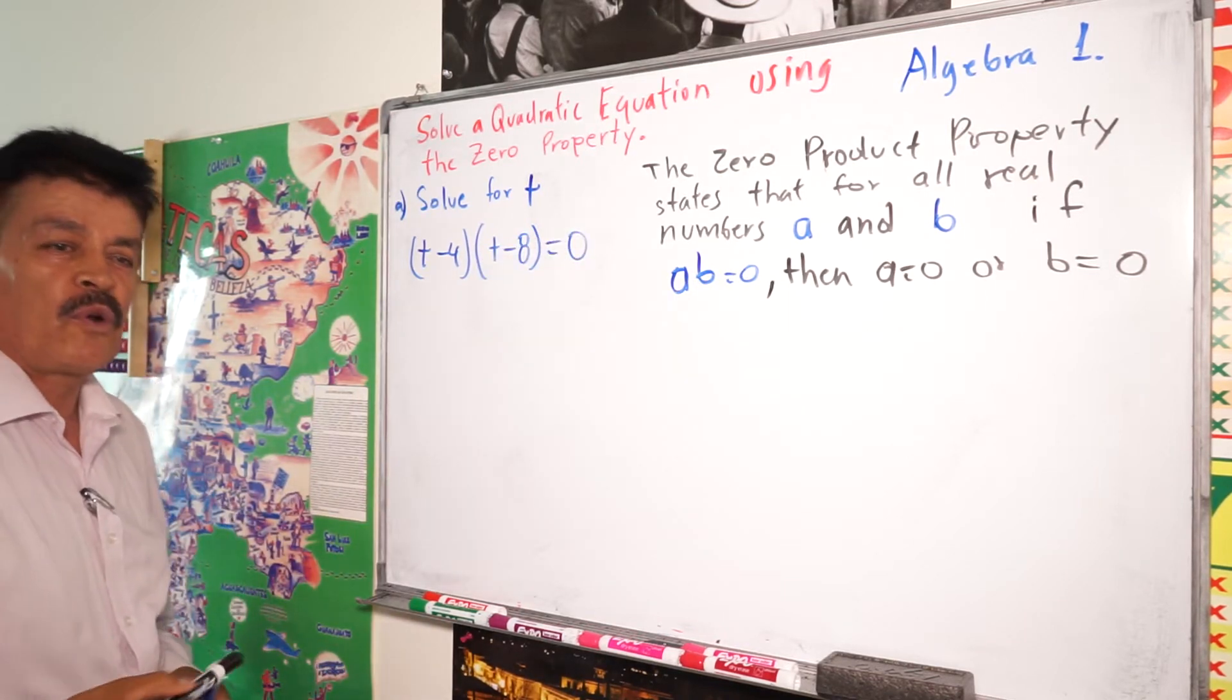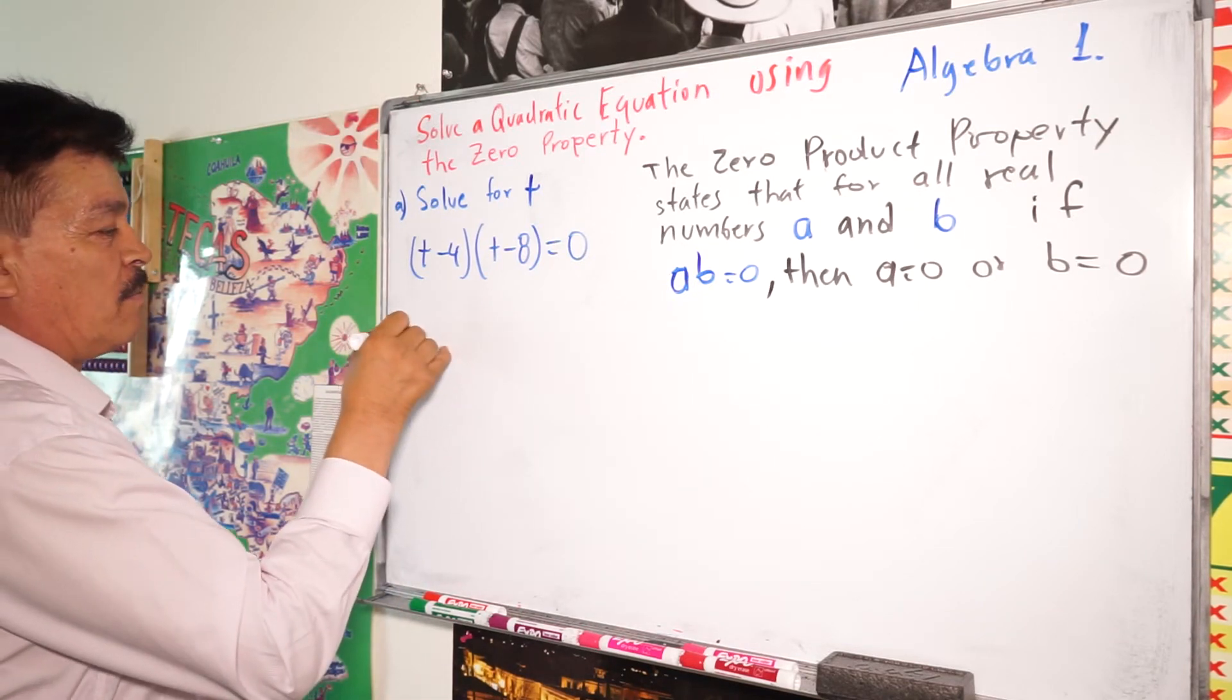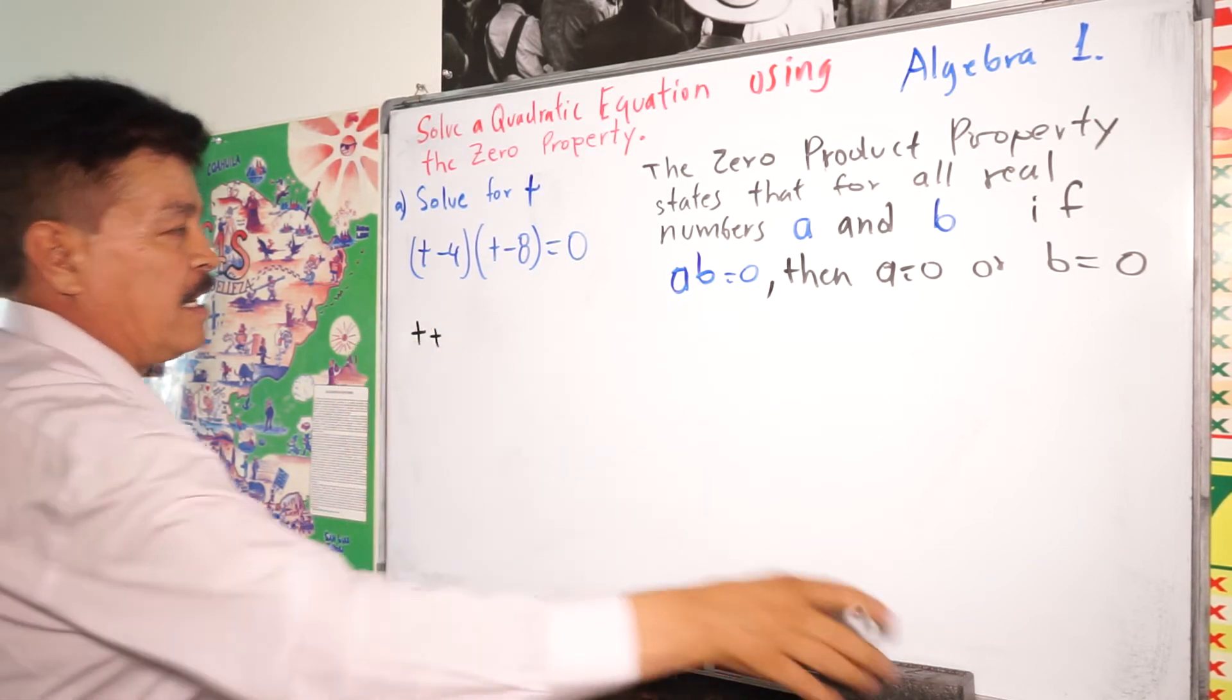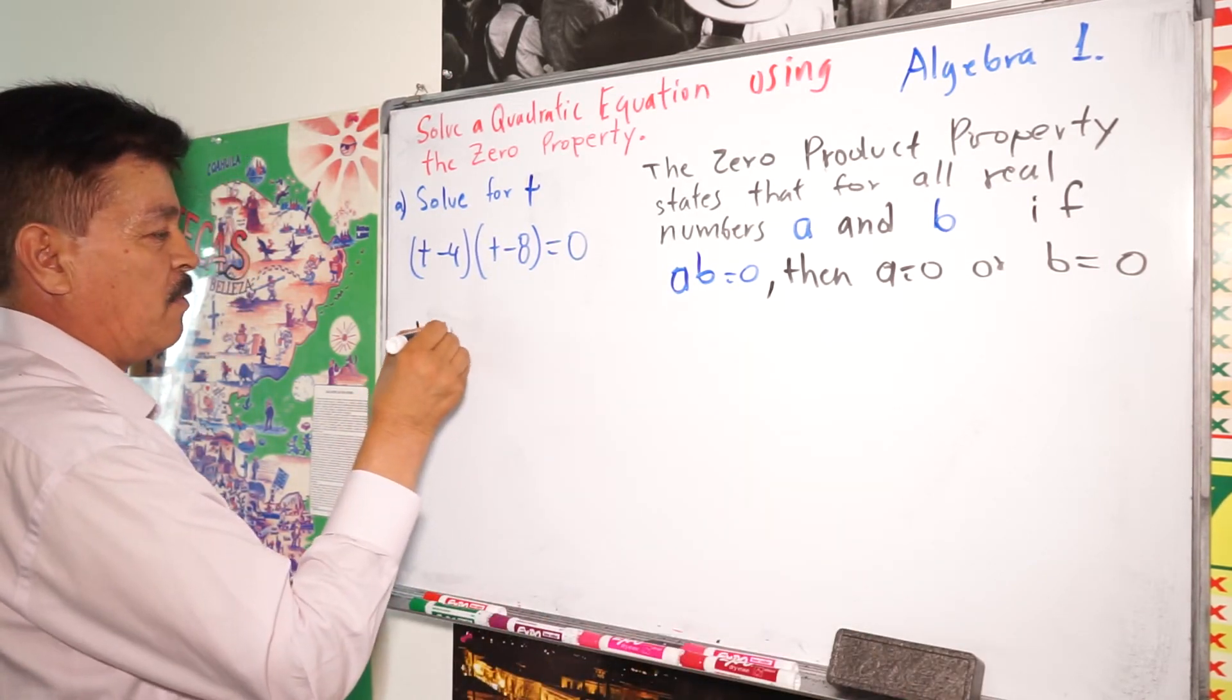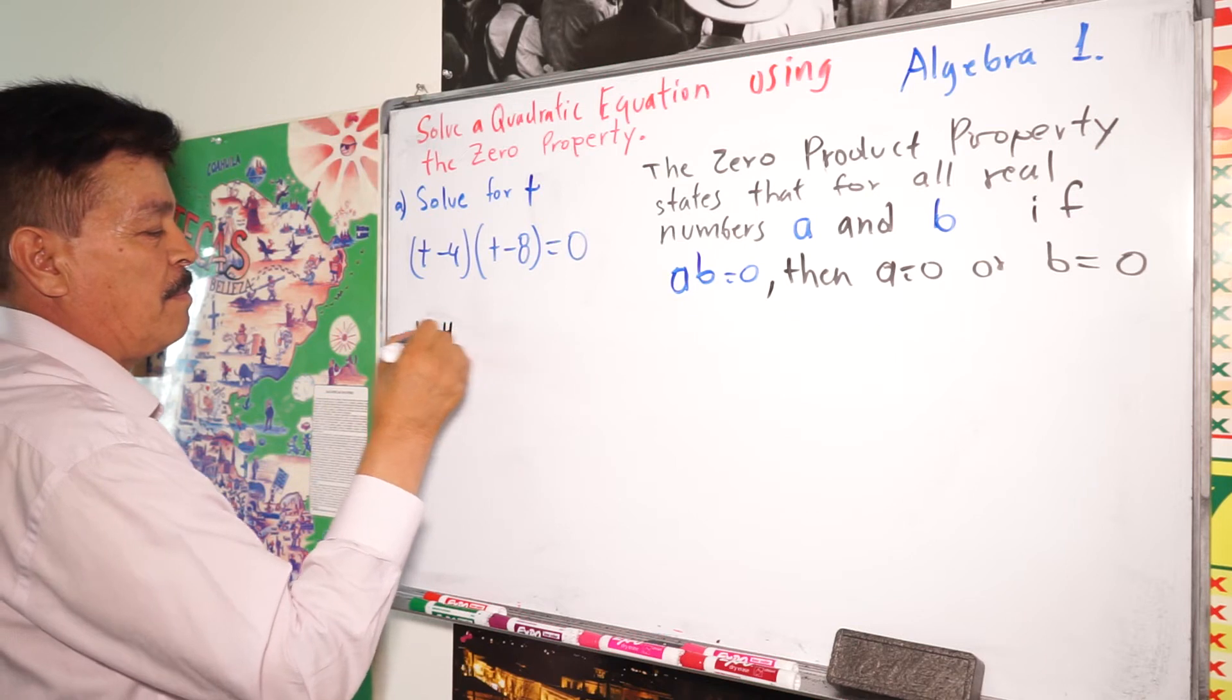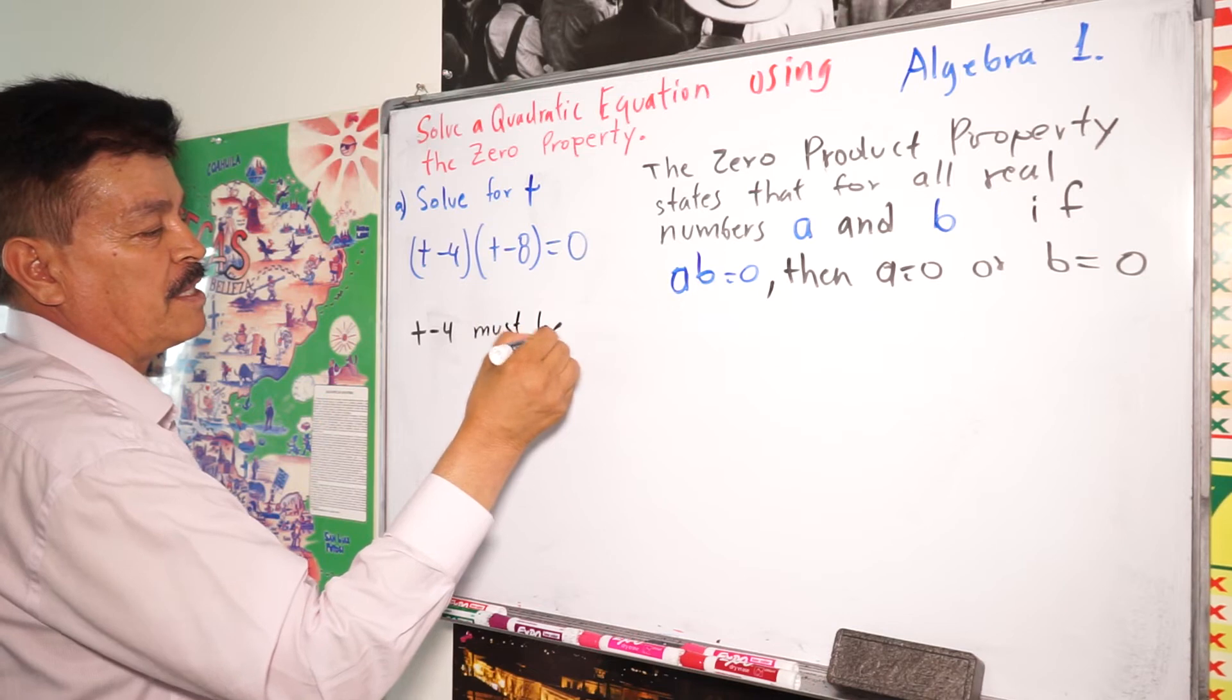According to the zero product property, here t-4 must be 0.